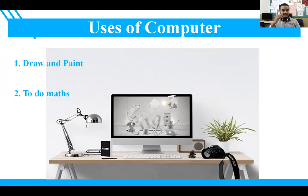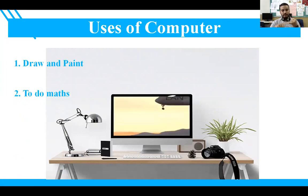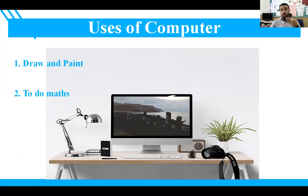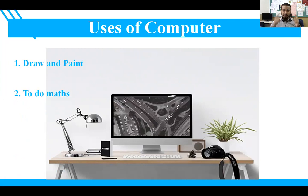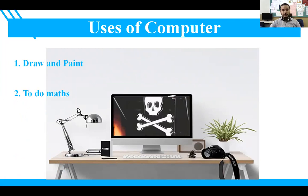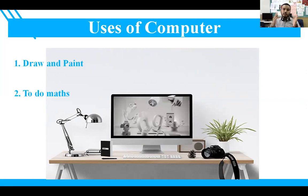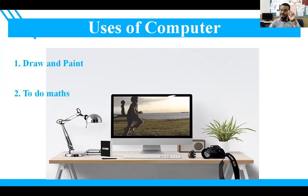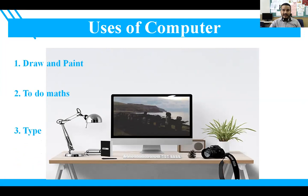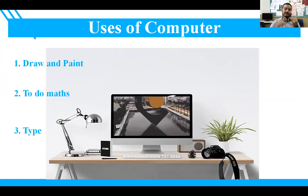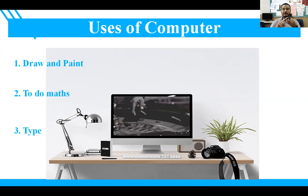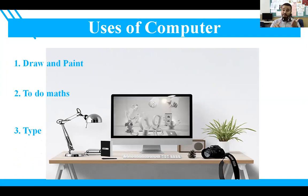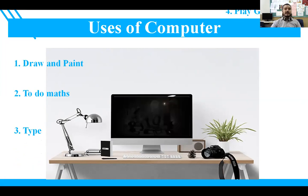The second use is to do math calculations. We can do simple mathematical operations like 1 plus 1, 2 plus 4 in our brains. But to do very complex operations which are beyond our mental calculation, we need machines — and for that we can use our computer. The third use is typing: using a computer you can type letters, mails, notes, and write anything using the keyboard.